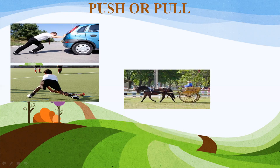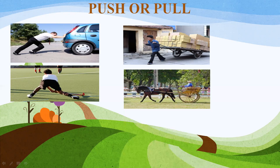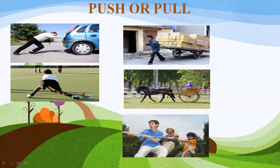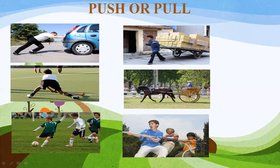Let us look into another event where a horse is pulling a cart — the horse is trying to bring the cart towards itself. In another picture a man is pulling a cart, applying force to move the object towards him. A group of boys are pulling a rope. The common property of pulling is that in all these events we are trying to move the object towards ourselves. In pushing, the player kicks the football away — the word push is most suitable.